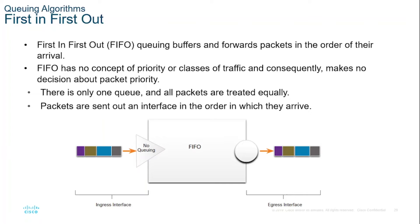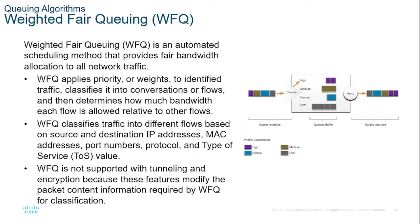FIFO, which is the fastest method of queuing, is effective for large links that have little delay and minimal congestion. If your link has very little congestion, FIFO queuing may be the only queuing you need to use.